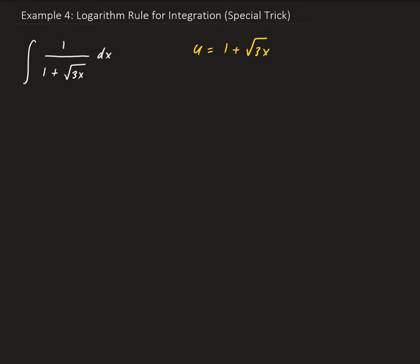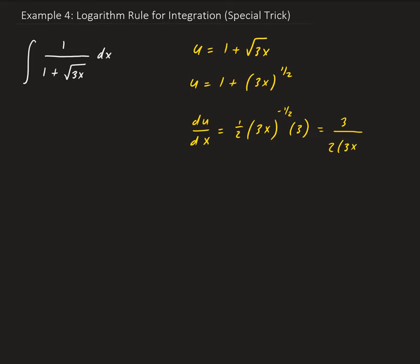If we proceed to use the typical u-substitution for integrals, it's not going to work in this case. If we take the derivative of u with respect to x — since u equals 1 plus 3x to the 1/2 power — we get 1/2 times 3x to the negative 1/2 times 3, which is the same as 3 over 2 times the square root of 3x. We don't have this expression in our original function.